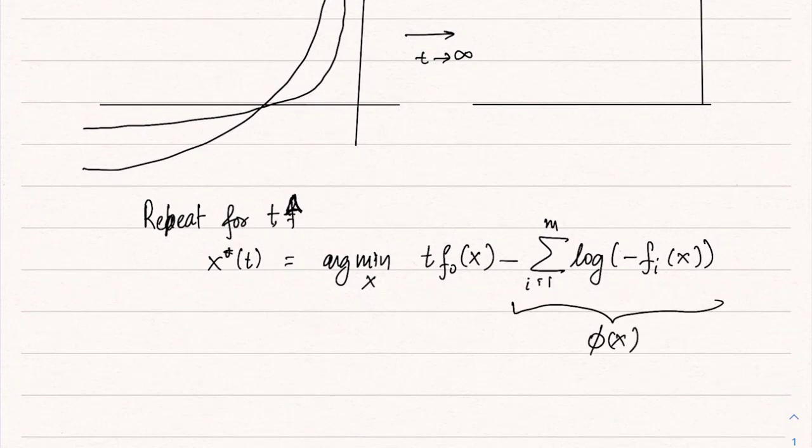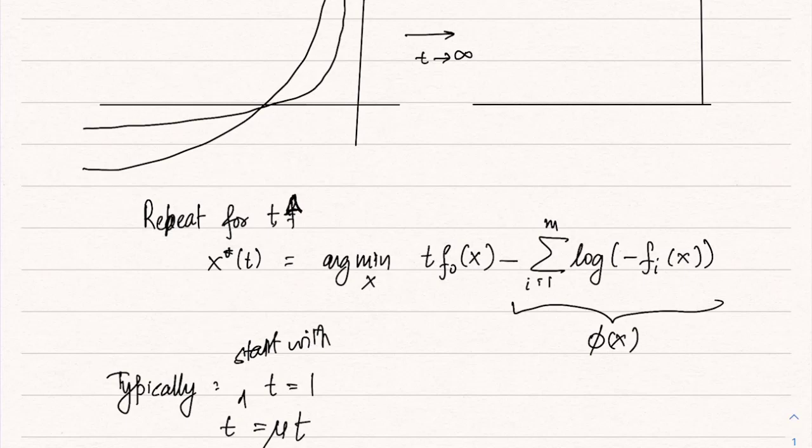Typically we start with t equal to 1, and at each step we update t equal to μ times the older t. So whatever t was there, I multiply it by μ, for μ let's say 10 or 20. These are the default settings in many of the software that you have seen—SeDuMi, SDPT3, and so on. So t increases by a factor of 10 or 20 at each time: first iteration it is 1, then it becomes 10, 100, 1000, 10,000, and so on.